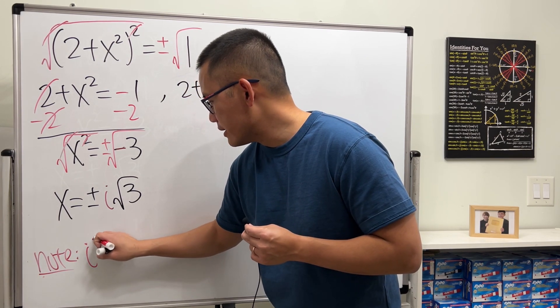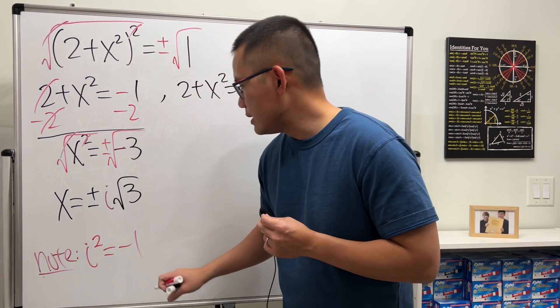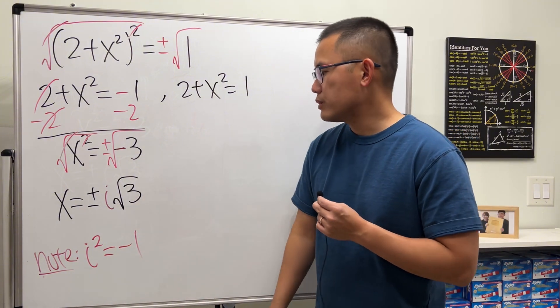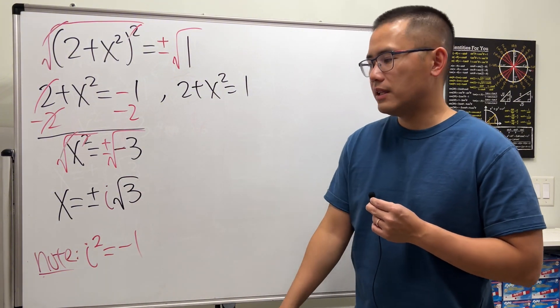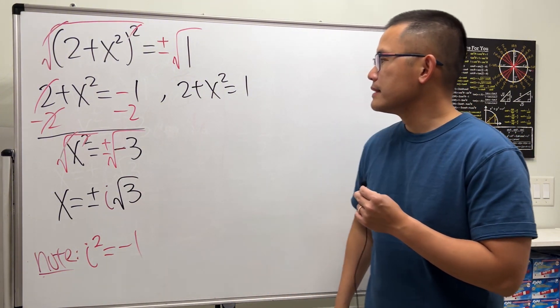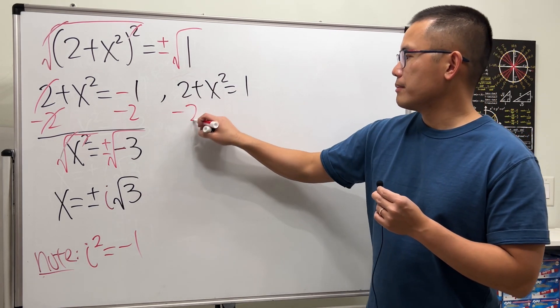i is the number so that i² is equal to -1. So when you have the square root inside of a negative, then you end up with the i. Now for this, do the same thing: minus two.